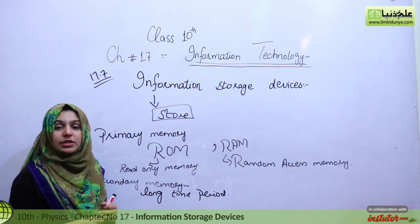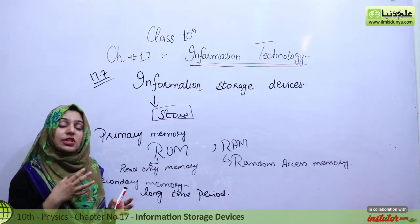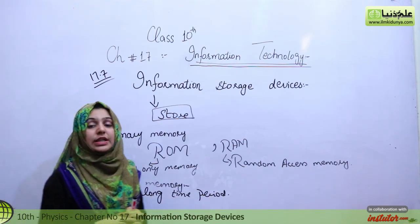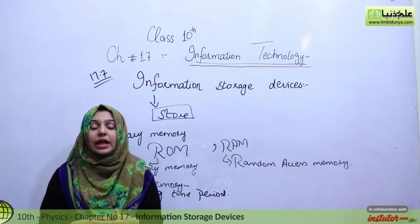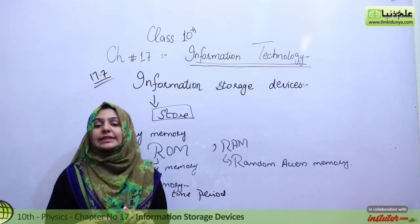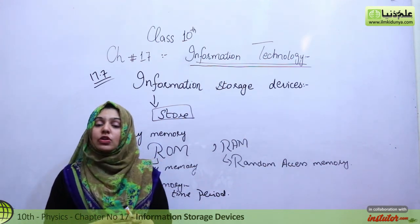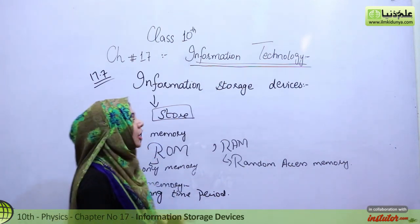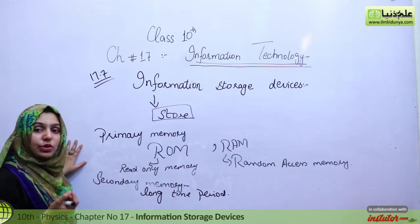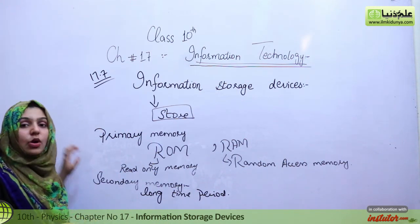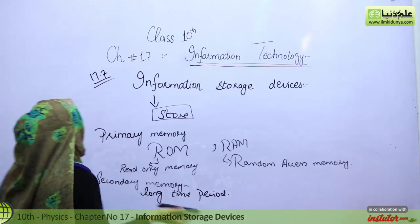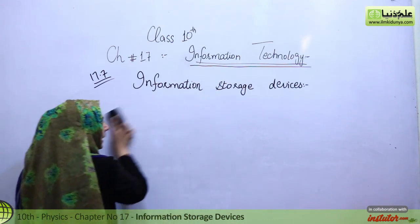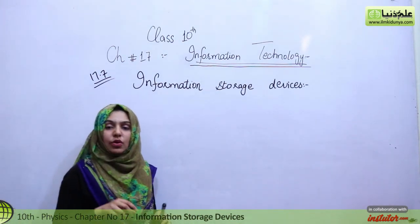Similarly, secondary memory — like the C drive — stores data permanently for a long time. Secondary memory includes devices we attach externally, like USB drives, cassettes, DVDs, and CDs. All these devices store information permanently, and the data won't be lost unless you delete it yourself. So we have primary memory and secondary memory; now let's discuss secondary memory devices further.